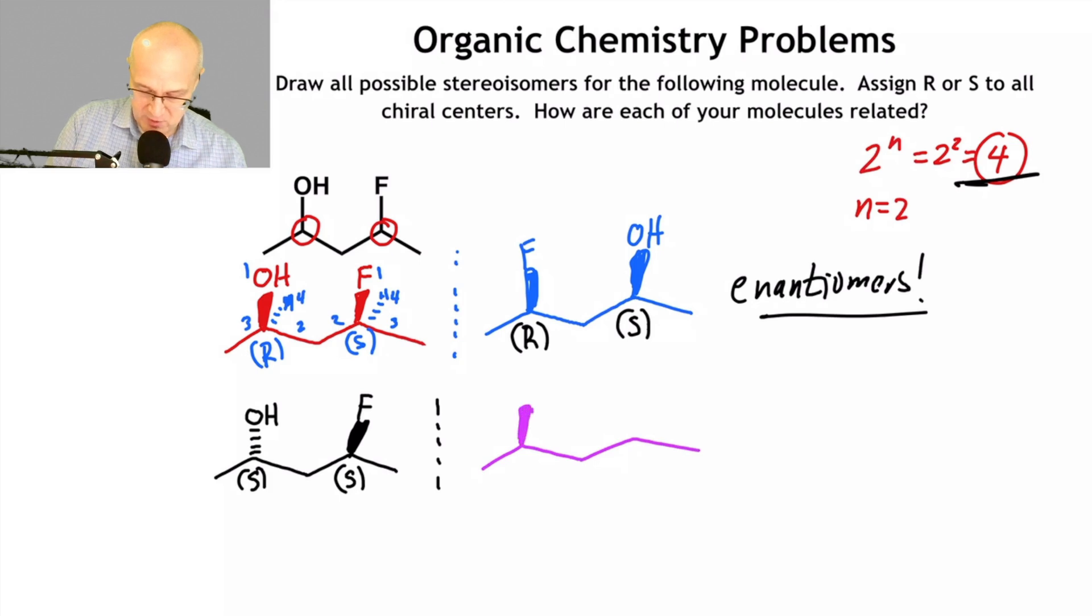So there's my third stereoisomer. Just draw the mirror image. And so now, if you're S here, you must be R here. If you're S here, you must be R there. And these are enantiomers.